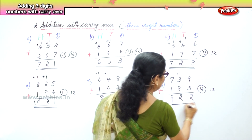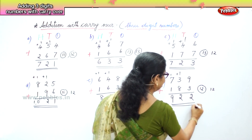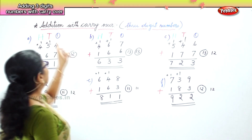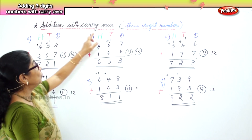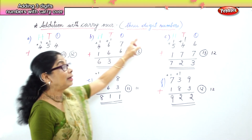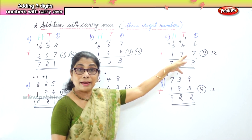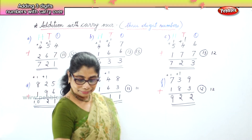Now we have learned addition with carryover for three-digit numbers — ones, tens, and hundreds.